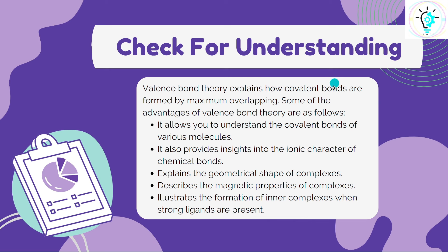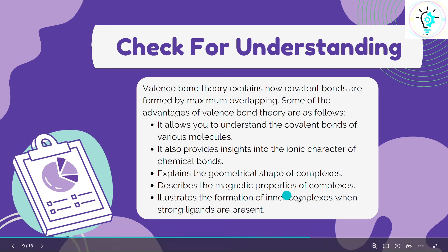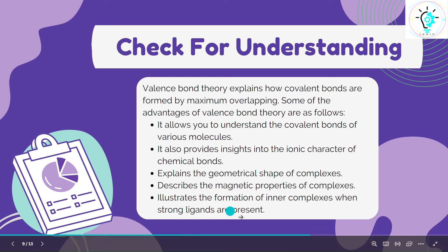Valence bond theory explains how covalent bonds are formed by maximum overlapping. So while VSEPR theory gives us the molecular geometry, valence bond theory explains the formation of covalent bonds due to orbital overlap. Some advantages of valence bond theory: it allows us to understand covalent bonds, it provides insights into the ionic character of chemical bonds, it explains the geometrical shape of complexes, it describes the magnetic properties of complexes, and it illustrates the formation of inner complexes when strong ligands are present.